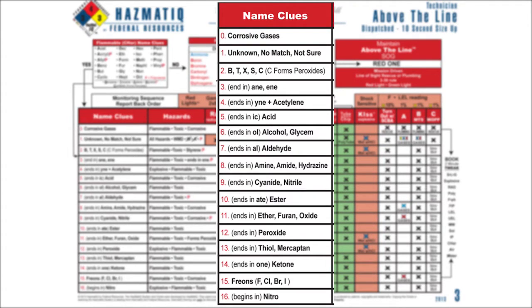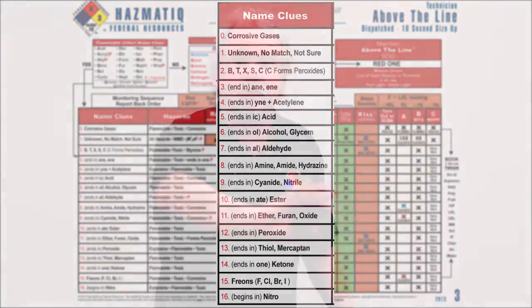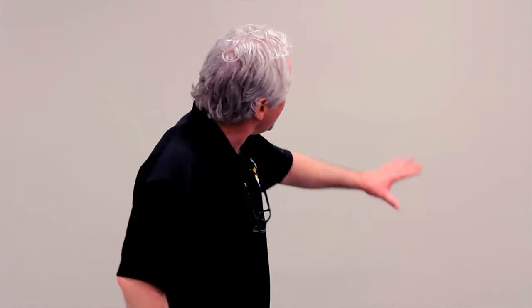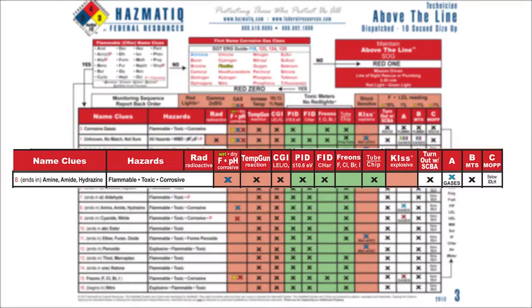It's a red eight. The beauty of knowing that it's a red eight is you can announce it to your team: we're responding to a red eight. And as soon as they know it's a red eight, we know the hazards — it's flammable, it's toxic, it's corrosive. Then we go from left to right and we look at meters. We look at the pH.